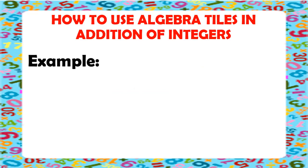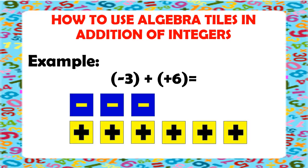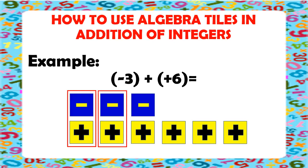Another example: negative 3 plus positive 6. Negative 3 means we have 3 blue tiles. So, let's draw 3 blue tiles. And positive 6 means we have 6 yellow tiles. So, let's draw 6 yellow tiles. Remember that whenever we have a yellow tile and a blue tile together, we always make a 0 pair. One yellow tile and 1 blue tile will make 1 zero pair. So, this is our first 0 pair, 2nd 0 pair, and 3rd 0 pair.